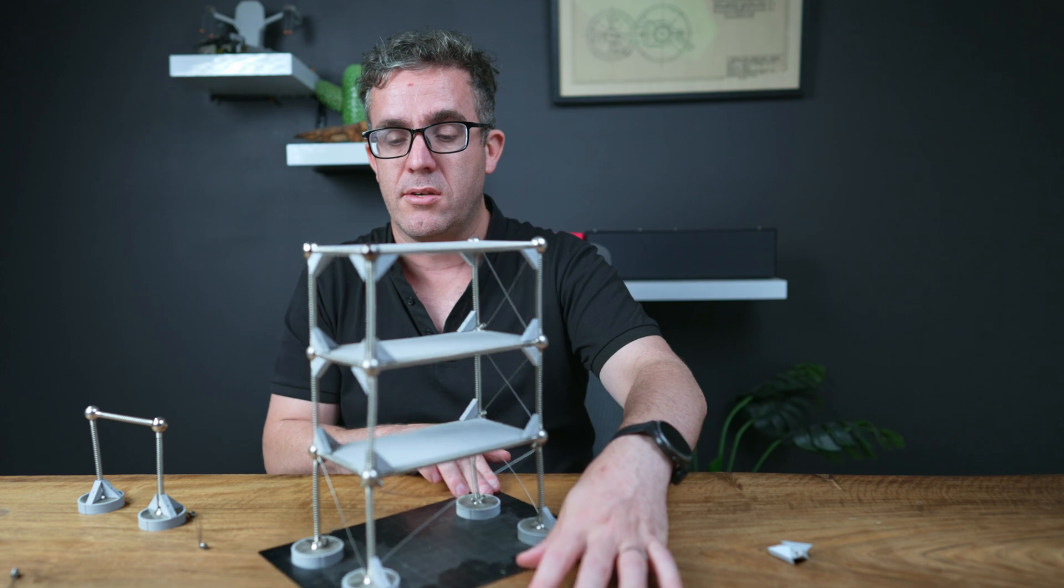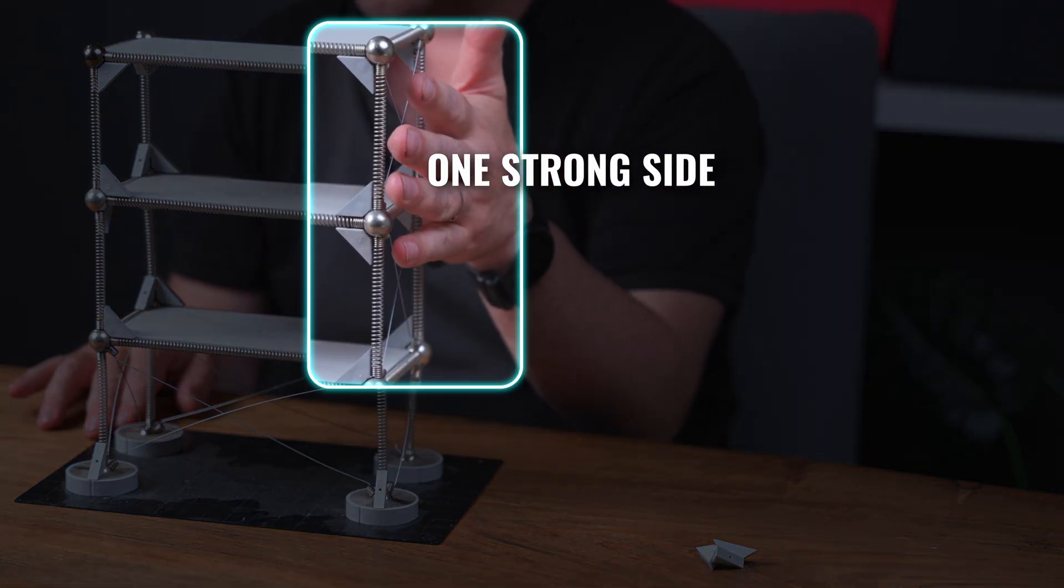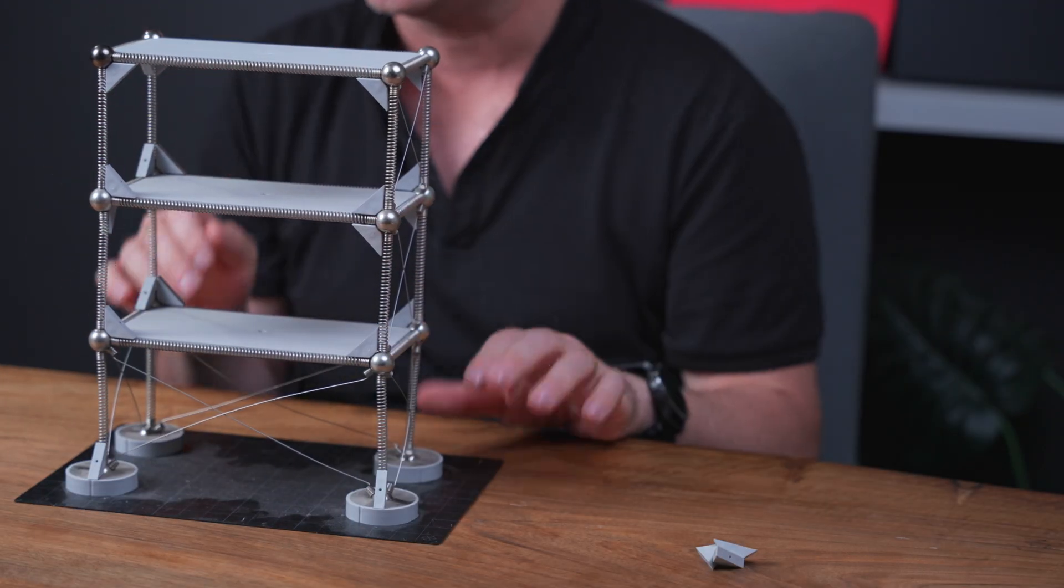We've really got one strong side here and two weak sides. That misbalance of forces has caused that twisting action to occur.